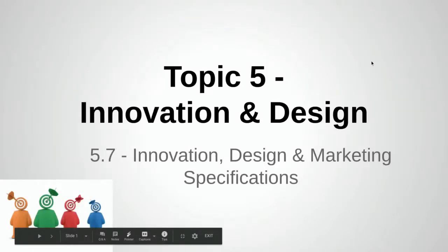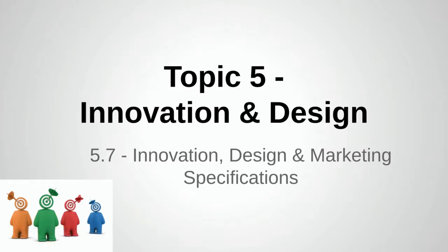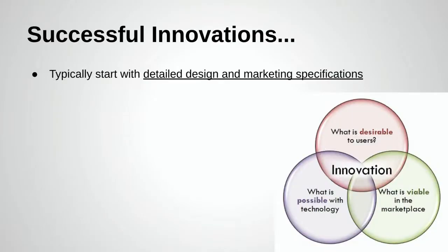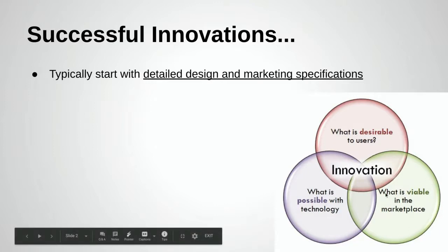Topic 5: Innovation and Design, Lesson 7 — Innovation, Design, and Marketing Specifications. Successful innovations typically start with detailed design and marketing specifications. Three things to keep in mind: what is desirable to users, what is viable in the marketplace, and what is possible with technology. If you can find something that overlaps in all three areas, you may have an innovation.